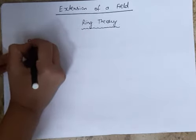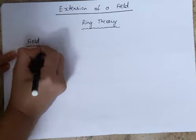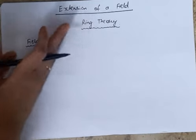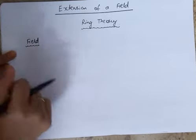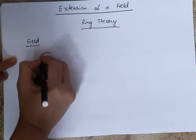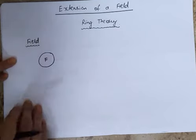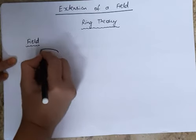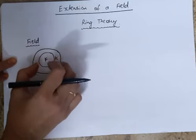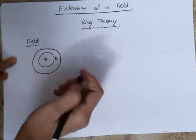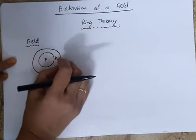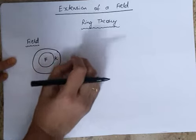First of all, you must know the meaning of a field. The field has been explained in a lot of detail in the videos across all three sections. Today we will discuss Extensions of a Field. Suppose we have F which is a field, and we have another field K which contains F. In other words, we can say that F is a subfield of K with respect to the same binary operations.